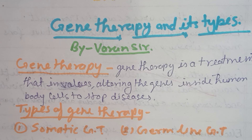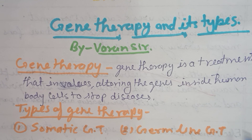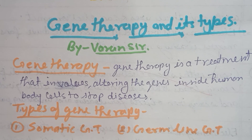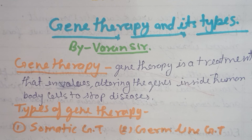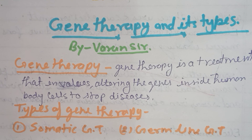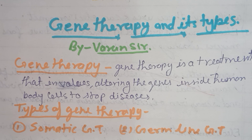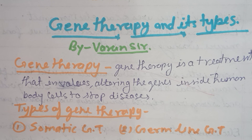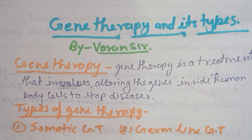In Germ Line Gene Therapy, germ cells — the sperm or ova — are modified by the introduction of functional genes which are integrated into their genomes. This allows the therapy to be heritable and passed on to the latter generations.